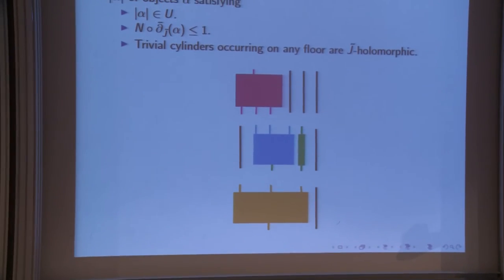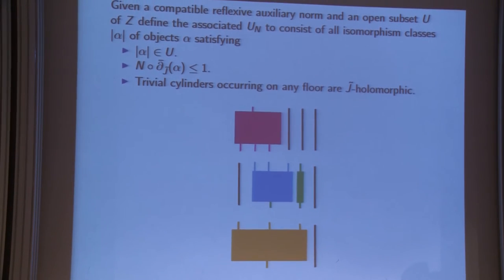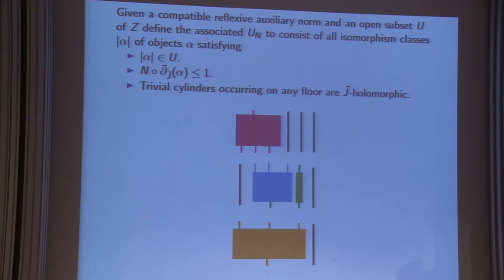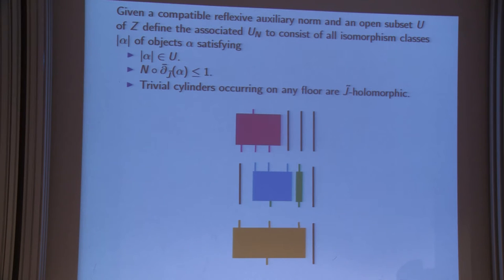Given a reflexive auxiliary norm — this is important, though you can ignore it for most purposes — the statements later would be wrong without that word. An open subset U_N consists of all isomorphism classes of objects in U, where the auxiliary norm on the Kocher-Riemann is less or equal to 1, and the trivial cylinders occurring on any floor are J-holomorphic. So these are J-holomorphic cylinders, and the data is such that when you apply the Kocher-Riemann operator and evaluate its norm, it's less or equal to 1.